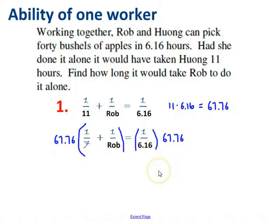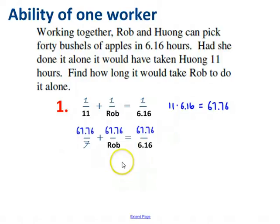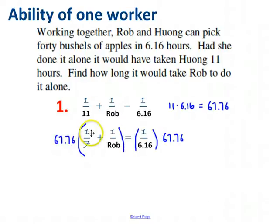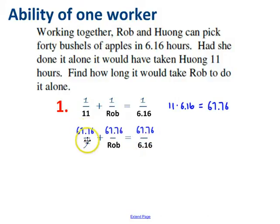Well, multiply the whole problem, in other words, both sides, by 67.76. If you do that, you'll find what you end up with. Let's go back and look at this. I had 1 over 7 plus 1 over Rob equals 1 over 6.16. Multiplying through, all I ended up with was 67.76 on top of these fractions. Well, 67.76 I can put in my calculator. That's 6.16. I can put this also in my calculator. That turns out to be 11.